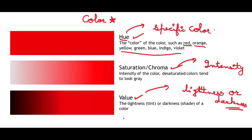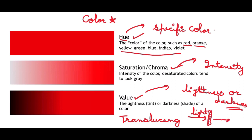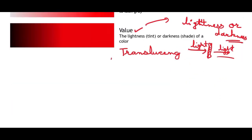Another important property is translucency — the property of partially allowing light to pass through an object. The teeth, especially the enamel, possess high brilliance and translucency, and the artificial tooth should replicate this property for a more natural appearance.